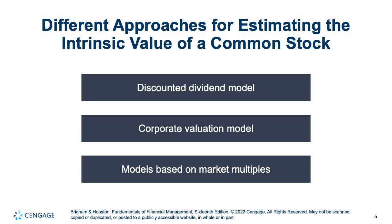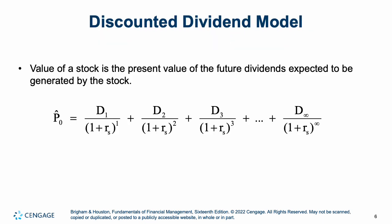There are three main approaches to estimate the intrinsic value of a company's stock. First is the discounted dividend model, where we use time value of money — from Chapter 5 — to discount a stock's dividends. Then the corporate valuation model. Then models based on market multiples. The discounted dividend model finds the value of a stock by finding the present value of all of its cash flows, or dividends, expected to be generated by it.